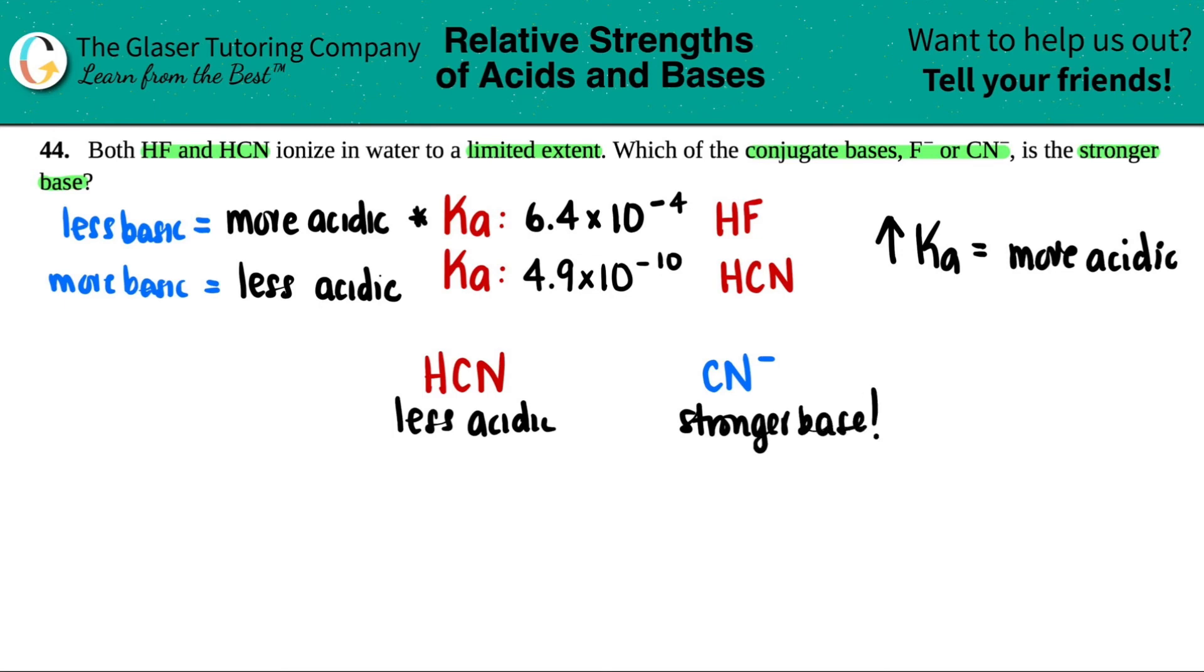Now you could also figure this out by actually finding out the Kb values of these and comparing them. But you'll find that CN minus is the stronger base as well. Remember, the higher the Kb, the more basic. So you could have just found those Kb values and compared them as well.